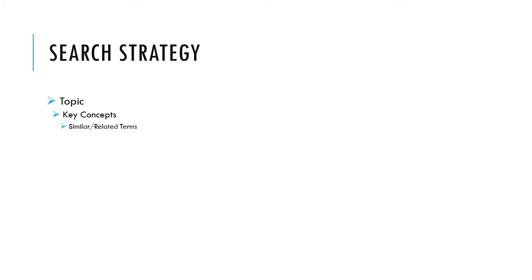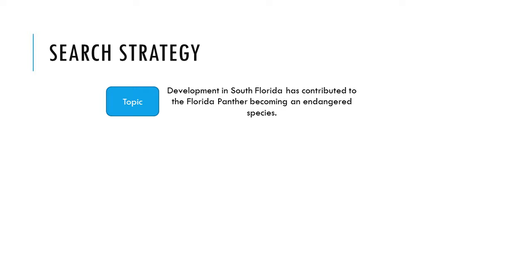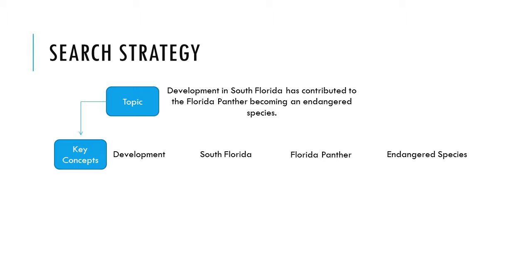Let's break this down together. Start out with your topic. Let's say our topic sentence is: development in South Florida has contributed to the Florida panther becoming an endangered species. From there, let's break that down into the key concepts: development, South Florida, Florida panther, and endangered species. These would be good search terms to start out with.